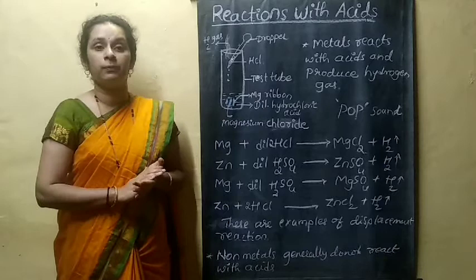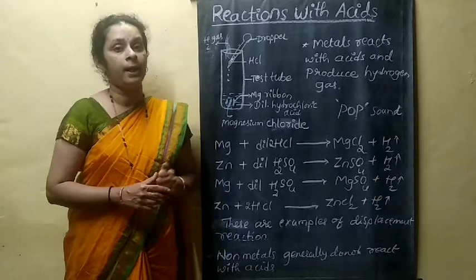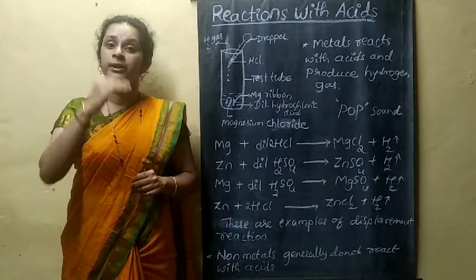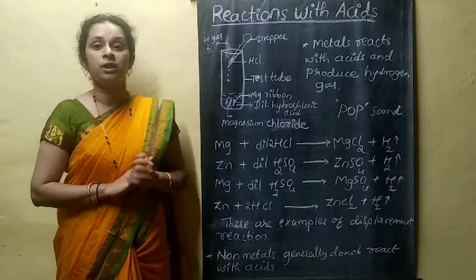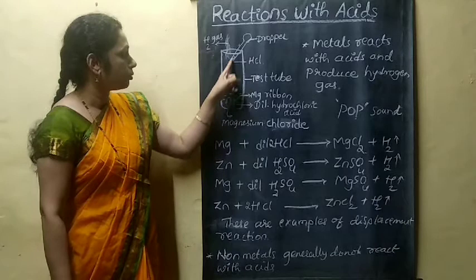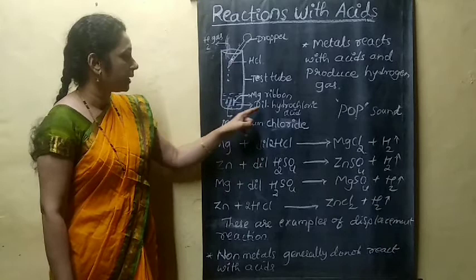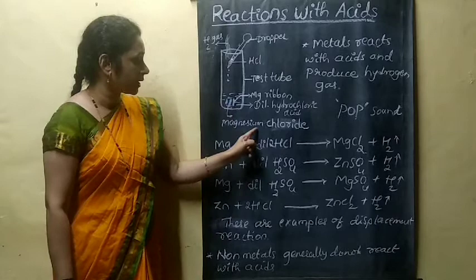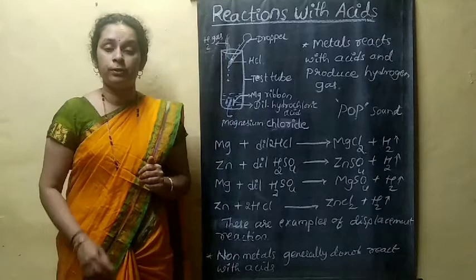What happens? A solution is formed — that solution is magnesium chloride — and one colorless gas comes out of the test tube. That gas is hydrogen gas. Magnesium reacts with dilute hydrochloric acid to form magnesium chloride solution, and hydrogen gas is liberated.